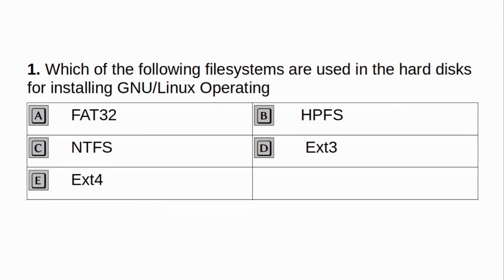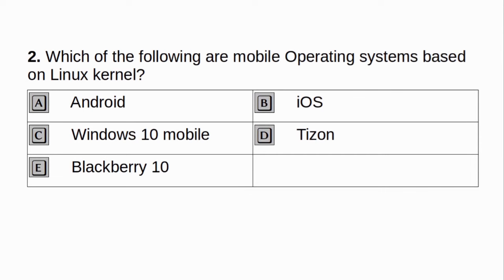Part 2. Which of the following file systems are used in the hard disks for installing new Linux operating system? a. 432. b. HPFS. c. NTFS. d. EXT3. e. EXT4. Answer: d and e.